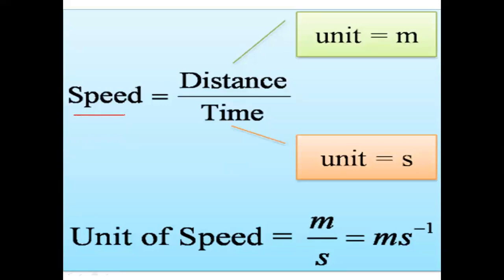Take the example of speed. Speed is measured by measuring length and time — distance divided by time gives speed, and distance means length. So speed is a derived quantity because we need measurement of length and time to find its value. The unit of speed is a derived unit because it depends upon the unit of length and the unit of time — that is, meter and second.